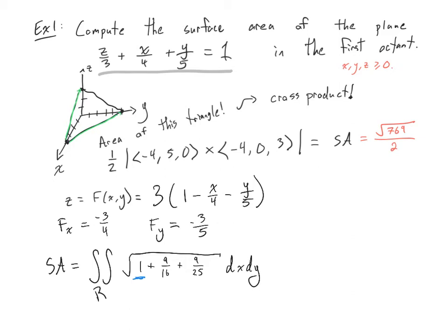Now what is R? R is the xy region that is the base that lives below the surface area that we care about. So because the surface area we care about is this green triangle that I've outlined. What you'll realize is that in the xy plane underneath it we have this triangle.